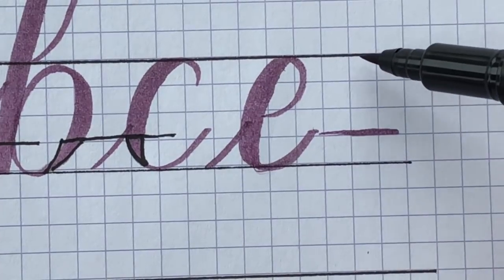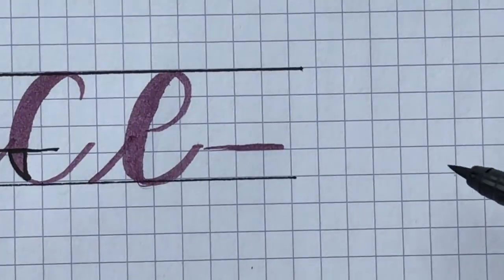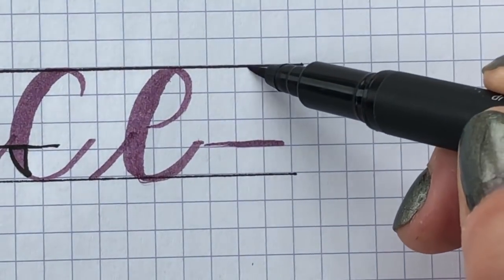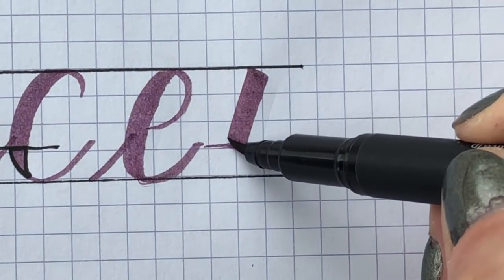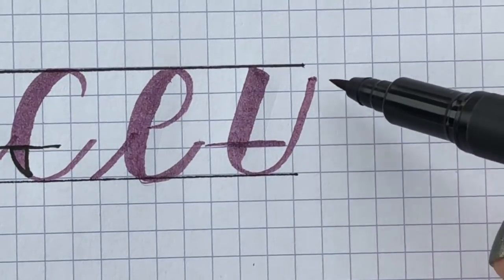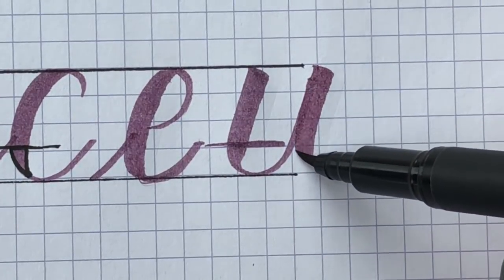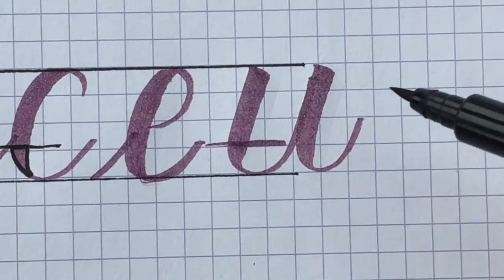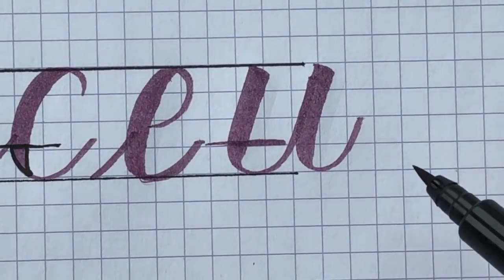So let's do another stroke. I'll do a U. That will be easier to see. I'm going to push, release, tip on the bottom and come up, and then push, release, tip on the bottom. You see that?